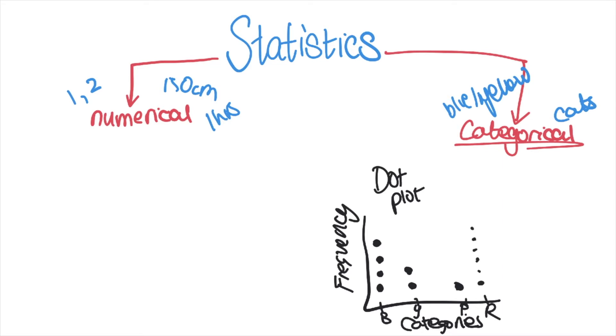Another way of showing your categorical data is through a column graph, which is exactly the same as a dot plot except instead of dots you are going to put columns. So this represents four, this represents two, one, six. Make sure you have labeled your axes here with the frequency. Column graphs - make sure your columns aren't touching.